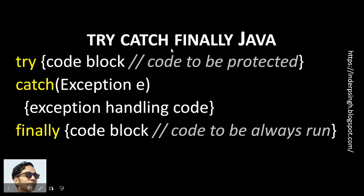You should understand the try-catch-finally Java statement. During execution, Java may get an error — this error during execution is called an exception. So when you write Java code that may throw an exception, you should use Java try-catch. First you put try, then you put the code block — this is the code that has to be protected. During execution, if Java throws an exception, because the code is in the try block, Java will not stop the execution. Instead it will go to the catch block, execute the exception handling code, and continue. That's how try-catch in Java works.